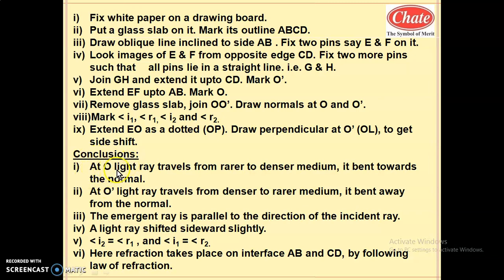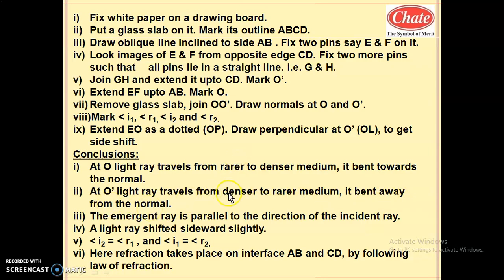Conclusions from this activity: At O, the light ray travels from rarer to denser medium and bends toward the normal. At O dash, the light ray travels from denser to rarer medium and bends away from the normal. Remember these two key sentences. The emergent ray is parallel to the direction of the incident ray.